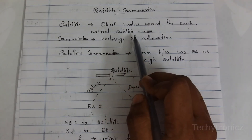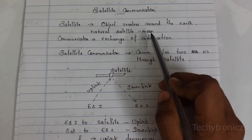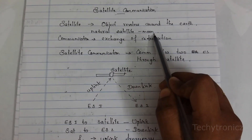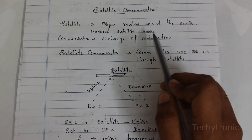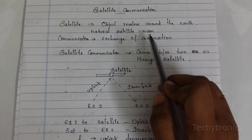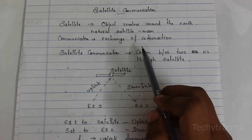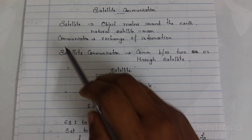Natural satellite means moon. And also nowadays we are having many satellites revolving around the earth. We all know that.